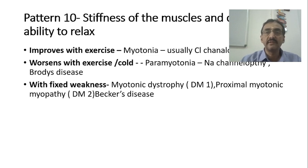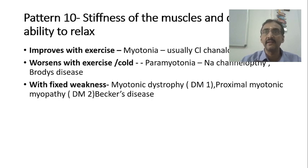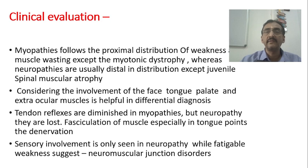My dear friends, as you know, we are discussing about muscular dystrophy. Initially, we went through a case and tried to understand some of the clinical importance and clinical points that have to be gathered. Later, we have seen two important things in the diagnosis: number one is differentiation between myopathy and neuropathy, and number two is identification of different patterns of muscle weakness. After this, now we will move on to the clinical evaluation.